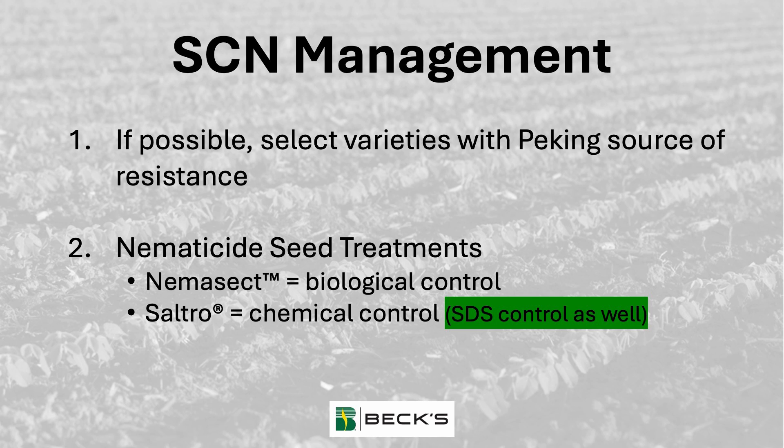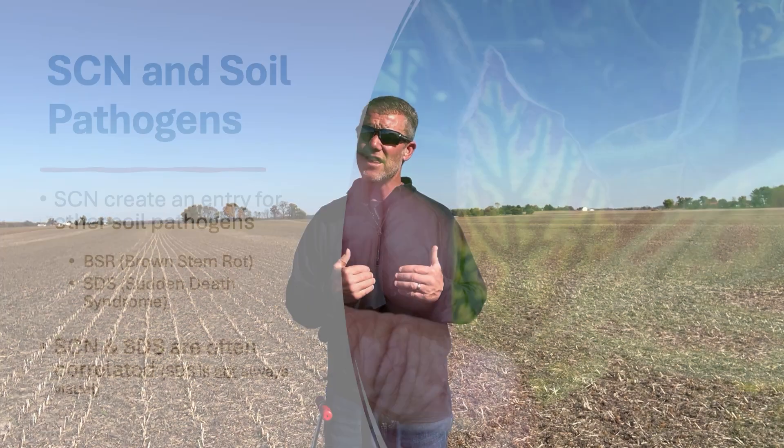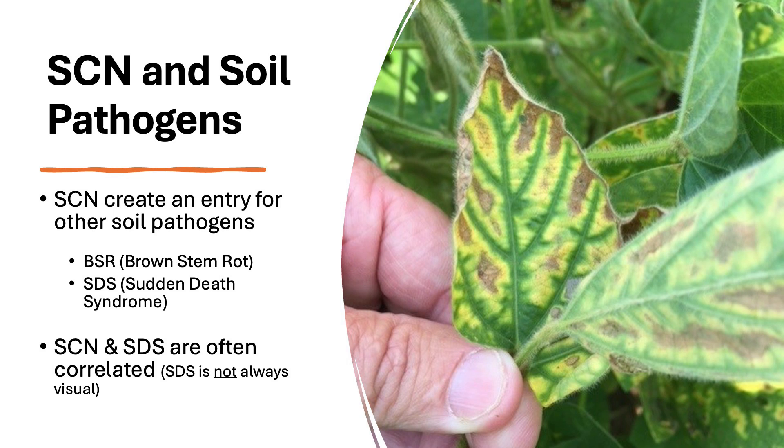However, selecting a whole farm of varieties that contain Peking is going to be very difficult. That's where management practice number two comes into play — a much more universal approach is seed treatment. In the Escalate Bag, we actually have two ways of controlling cyst nematode: a biological nematocide called Nemasect, as well as, if you use the upgrade package, hard chemistry called Soutro. There are other products on the market like Alevo that kill cyst nematode, but Soutro is hard chemistry — not working biologically — and is highly effective at controlling cyst nematode as well as SDS. Those two yield-robbing pests oftentimes go together, as the cysts actually create the entry point for the fusarium that causes sudden death syndrome to enter the plant in the first place.